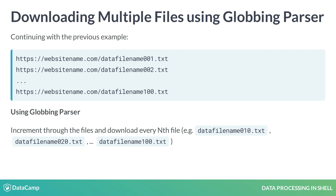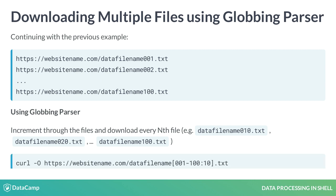We can increment through the files and download every nth file. For example, to download every 10th file, we can modify the globbing parser to read [001-100:10].txt.